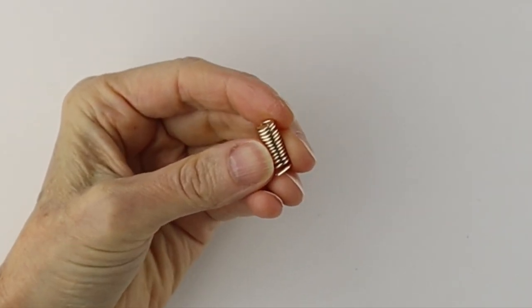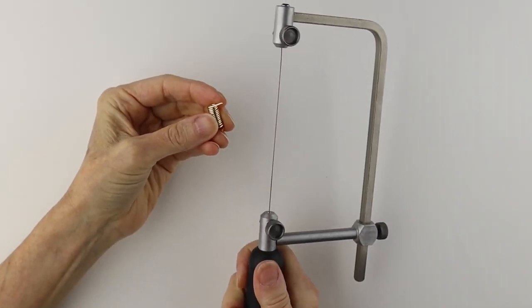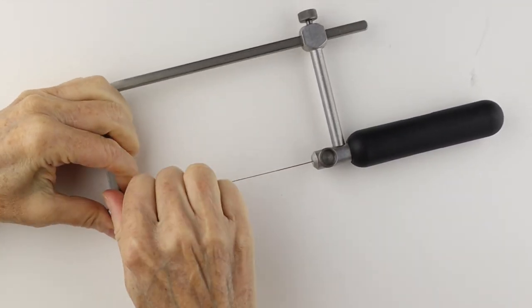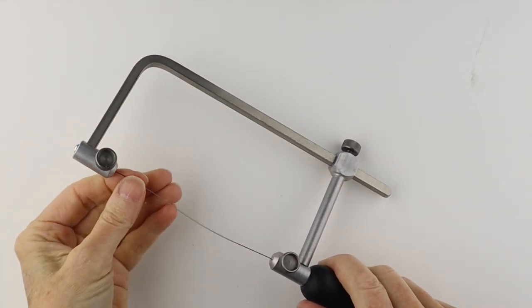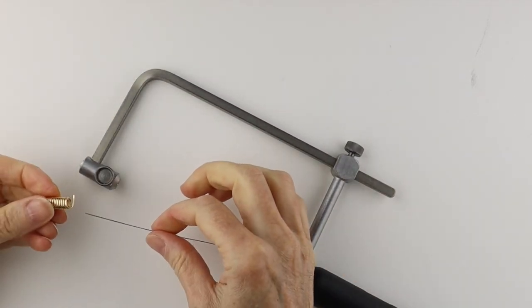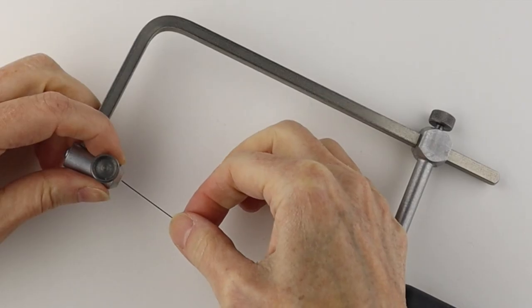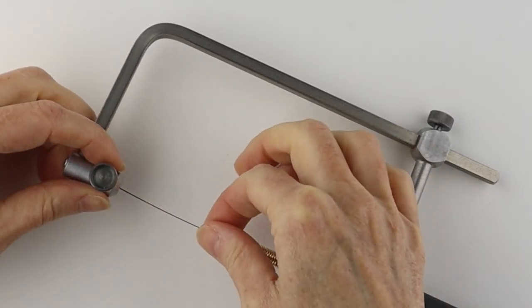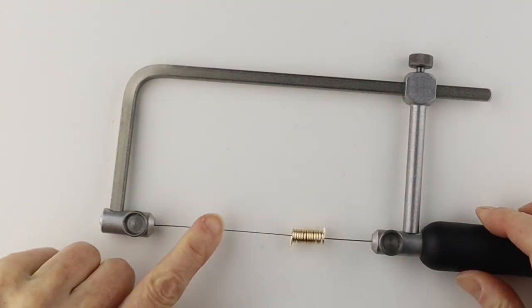You can cut this with the flush cutters, the double flush cutters, or you can use a jewelry saw. You can unscrew this blade so just loosen this up, take this out, put the spring on there, put the blade back in, pull this tight, and screw that so it's tight.